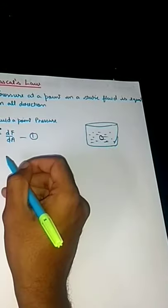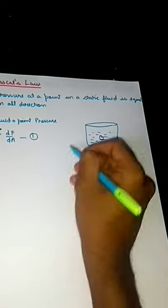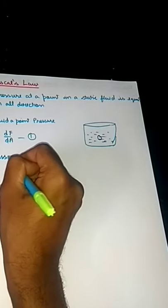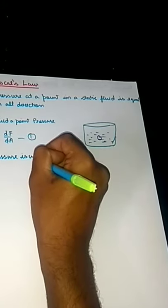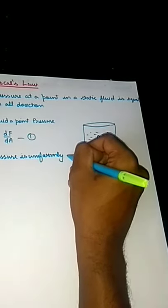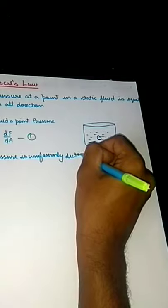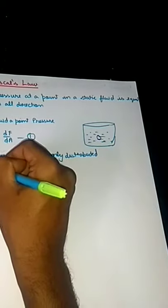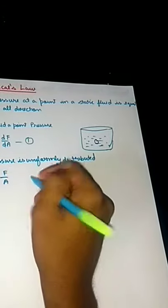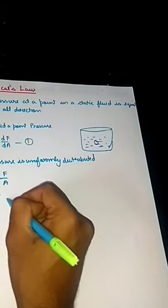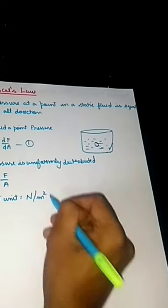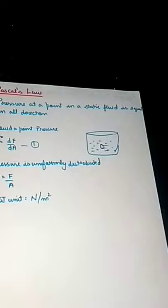Now if the pressure is uniformly distributed all around the area, pressure will be force by area, and the SI unit will be N per meter square.